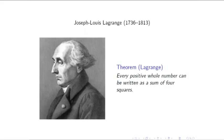Every positive whole number is a sum of 4 squares. I continue to find this kind of surprising because it seems so obviously untrue. This is a theorem of Lagrange — Lagrange who also worked in celestial mechanics and all sorts of other things, but when he wasn't sorting out the movement of the planets he was showing that every positive number is a sum of 4 squares.